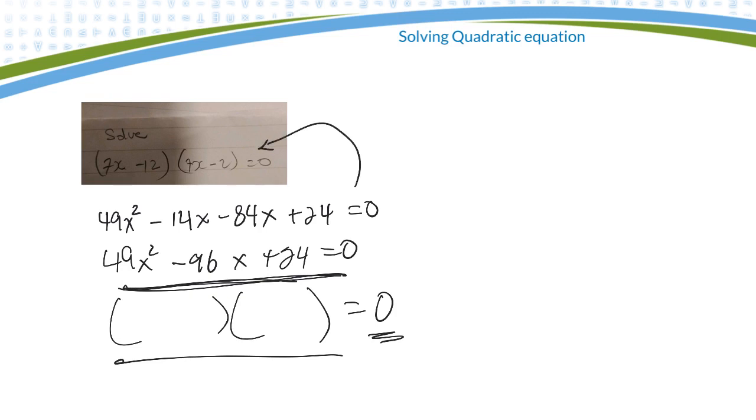So this one here is already factored. I have (7x - 12)(7x - 2) = 0. This multiplied by this gives me 0, so either 7x - 12 = 0 or 7x - 2 = 0.